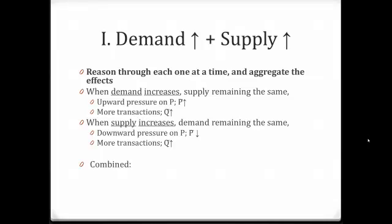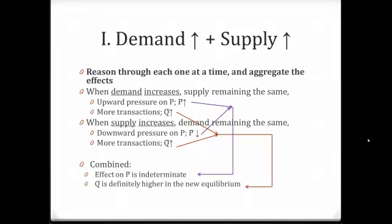Now let's aggregate these two. Combined, the upward pressure on price because of the higher demand counteracts the downward pressure on price because of the higher supply. As a result, the effect on equilibrium price is indeterminate. What will happen to equilibrium price — whether it will be higher, unchanged, or lower — depends on the relative strengths of the demand and supply factors. However, since higher demand and higher supply both result in more transactions, they reinforce each other. We can say for sure that equilibrium quantity will definitely be higher in the new equilibrium.